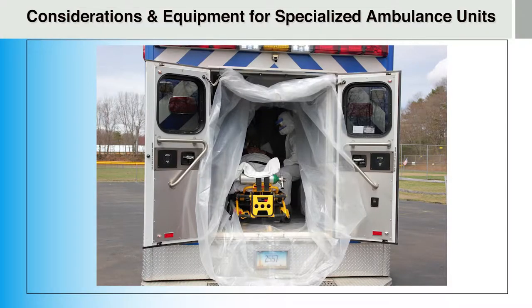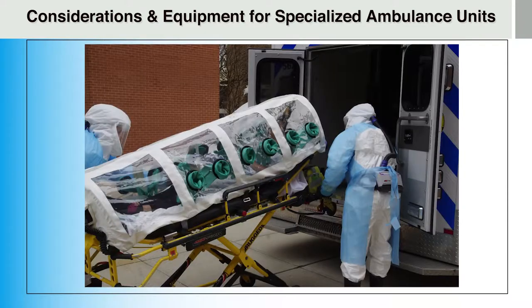Prior to transporting patients under investigation for highly infectious diseases such as Ebola, certain procedures should be followed to limit the contamination of ambulance surfaces. Some jurisdictions employ ambulance wrapping techniques which cover nearly all internal surfaces of the ambulance patient compartment with plastic barriers. Other services transport patients in commercial patient containment units such as isopods. The following sections outline guidelines for ambulance wrapping and preparation as recommended by OSPR, covering three major components: applying barriers, equipment readiness, and climate controls.